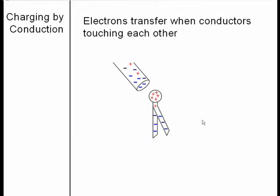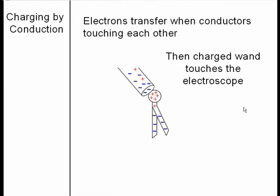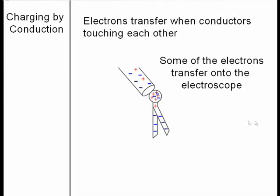They're trying to get as far away as possible from the negative charge on the wand. As I bring the wand up and touch the top of the electroscope, the positive charges on the electroscope are attracting electrons off of the rod onto the electroscope.